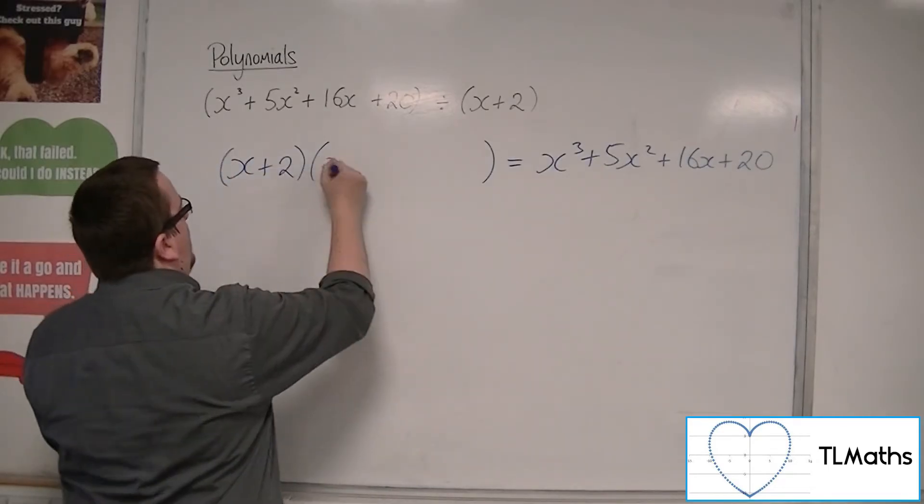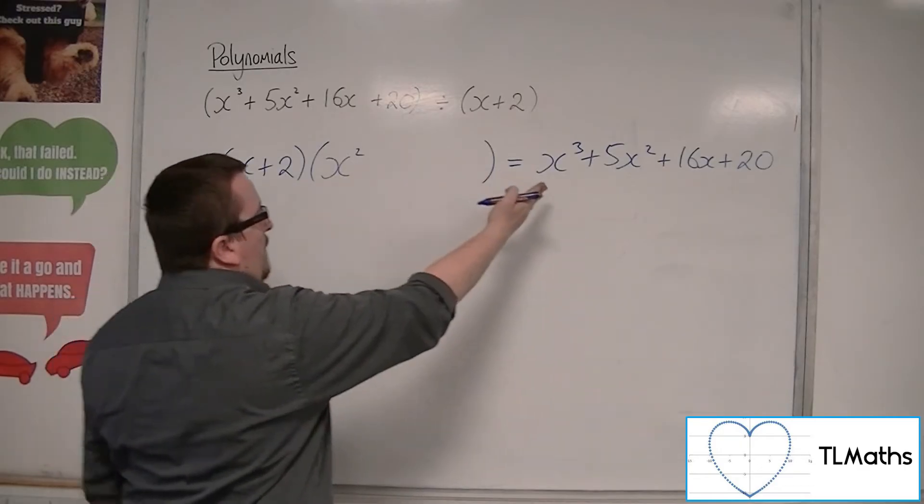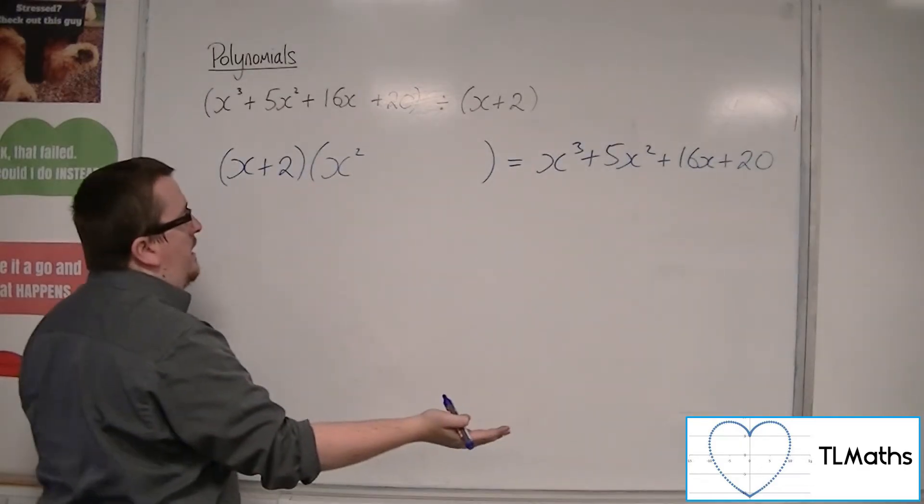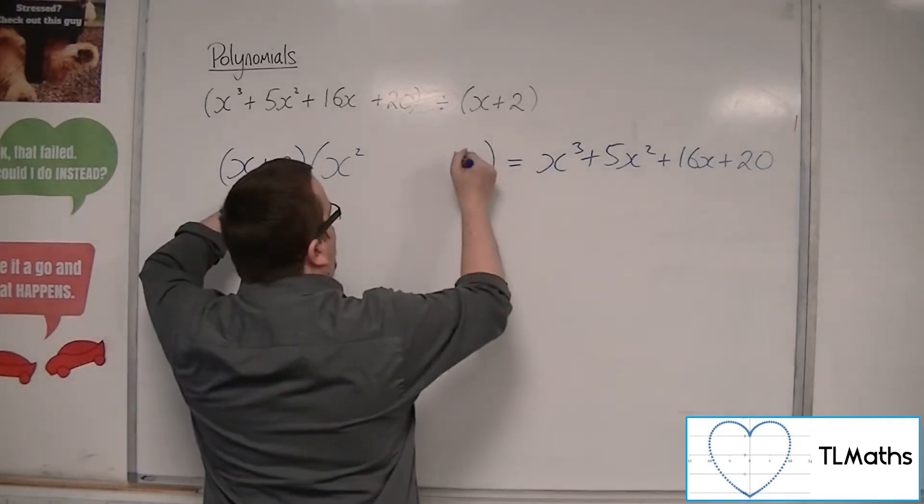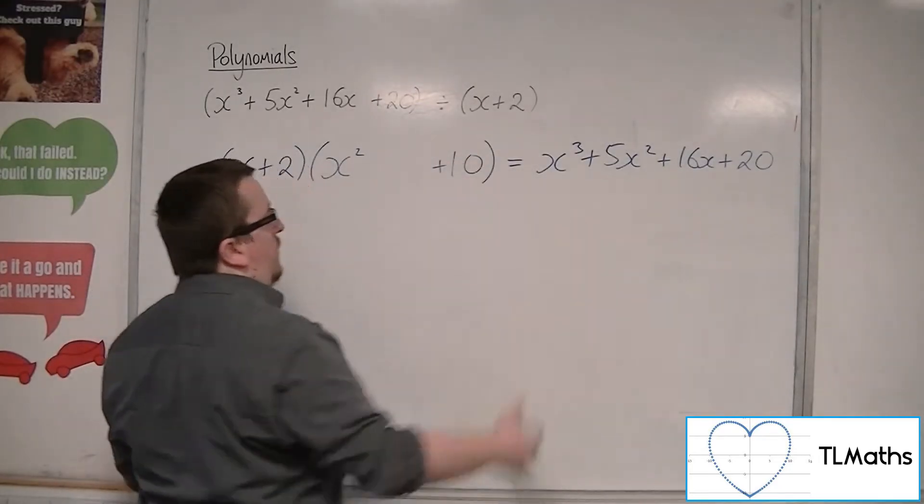Well, I would have had to have had x squared. x times x squared must make the x cubed. That's the only way I can get there. I must have 2 times 10 to make the plus 20.